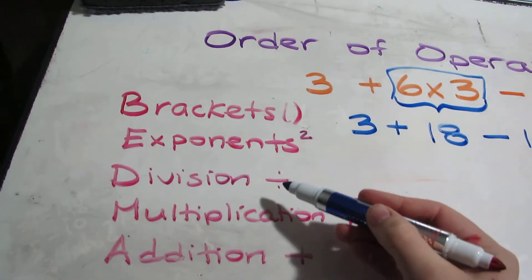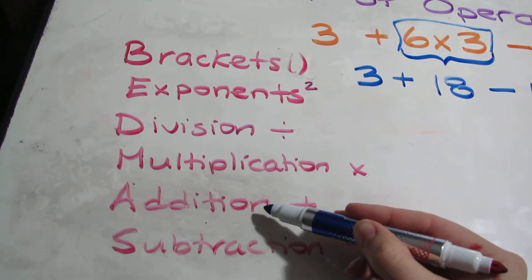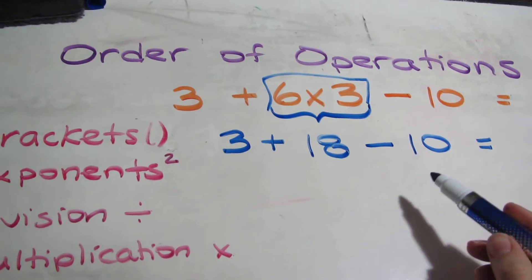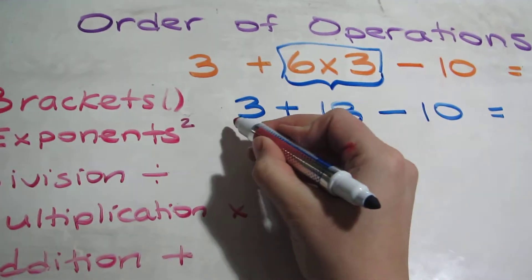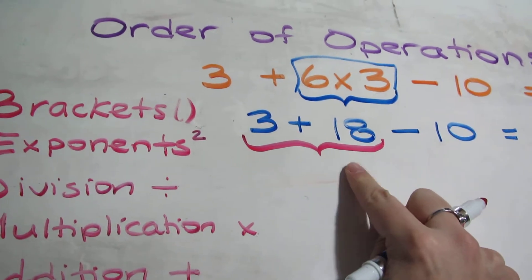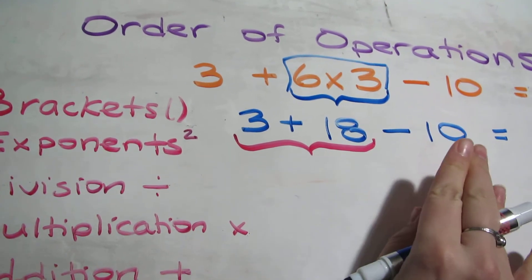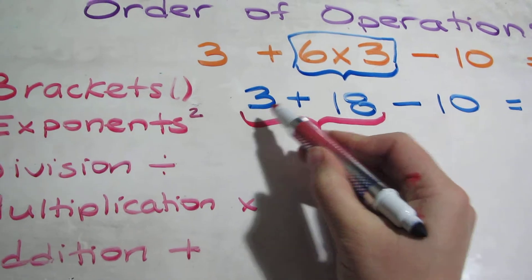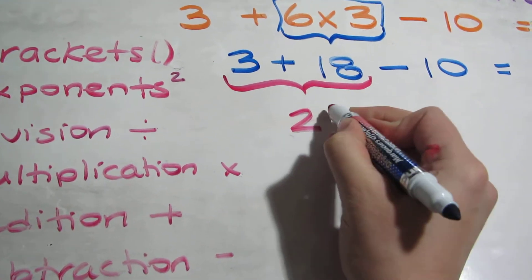I checked my list. Multiplication—what comes next? Addition. So whatever is in my addition I have to do next. Again, I'm going to select only the numbers involved in my addition. I don't need anything else. So I'm going to do 3 + 18, which is 21.